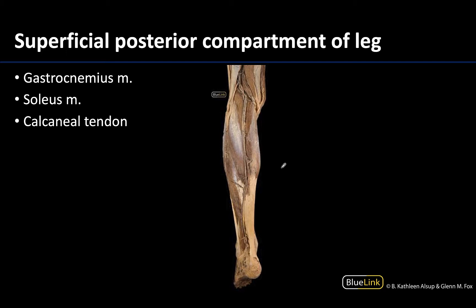The first, or most superficial, is going to be the gastrocnemius. You can see that its proximal attachments are actually up near the condyles — the medial and the lateral condyles of the femur. So this muscle is actually crossing the knee joint, meaning it can play a small role in movements of the knee joint. You can clearly see two bellies of the gastrocnemius when looking at the posterior leg region.